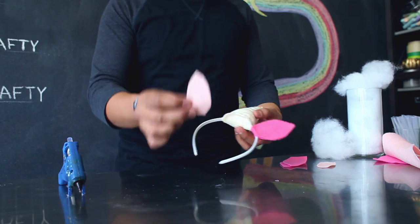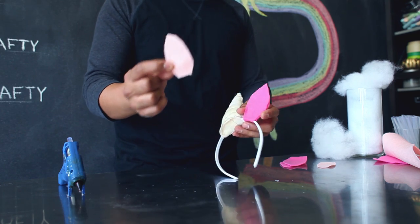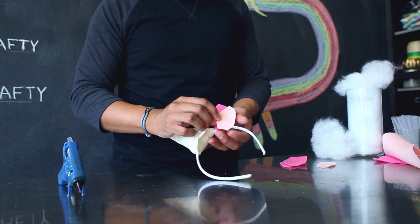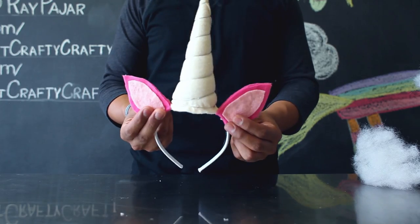Using another color of felt, cut out a smaller version of the ear except it only has to be one-sided and then glue that onto the top of your ear. Repeat it on both sides of your horn.